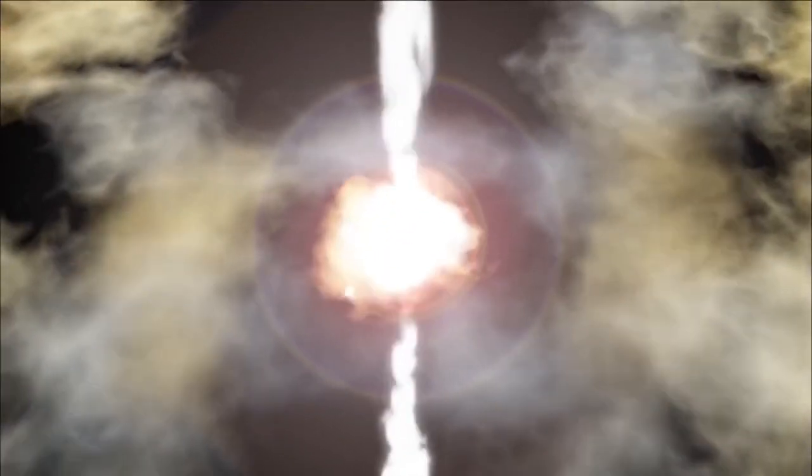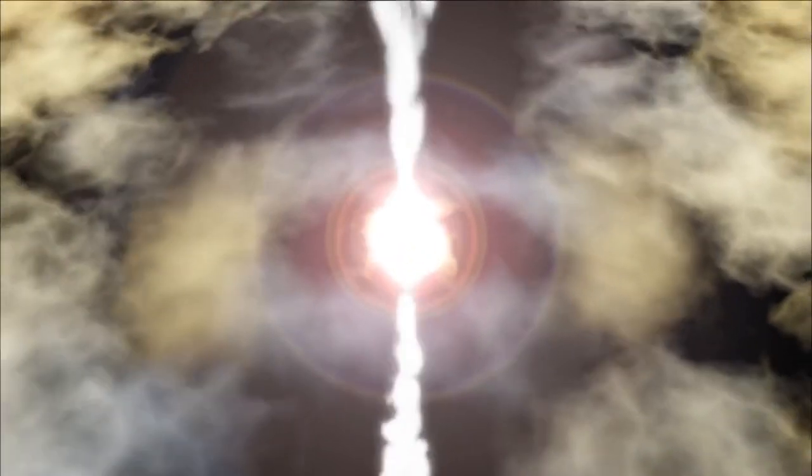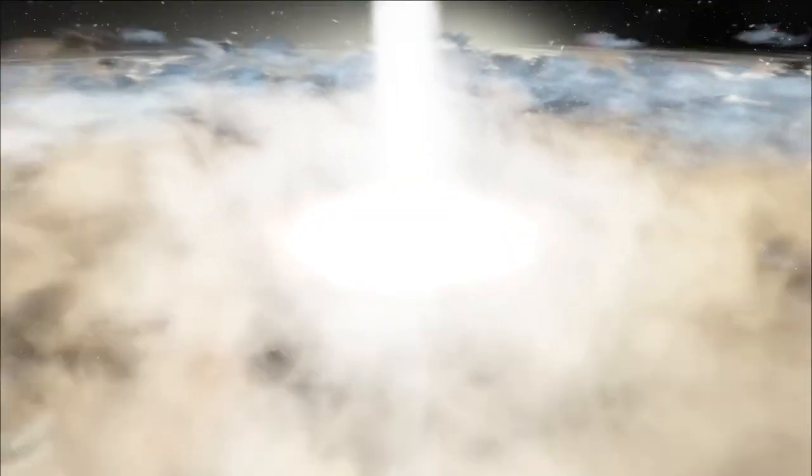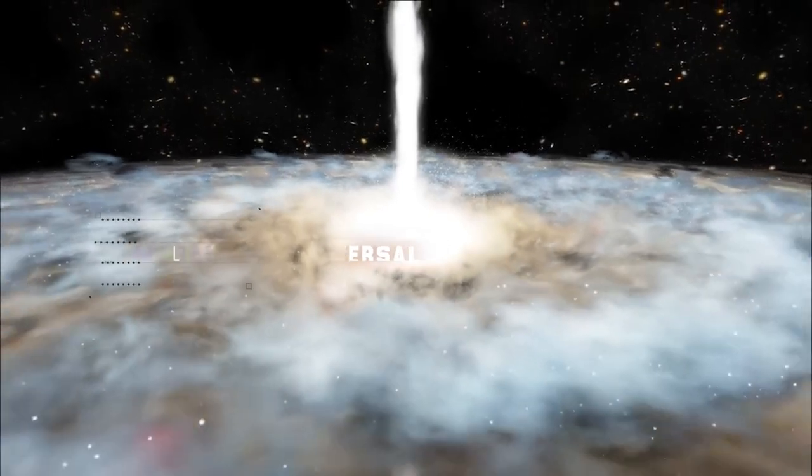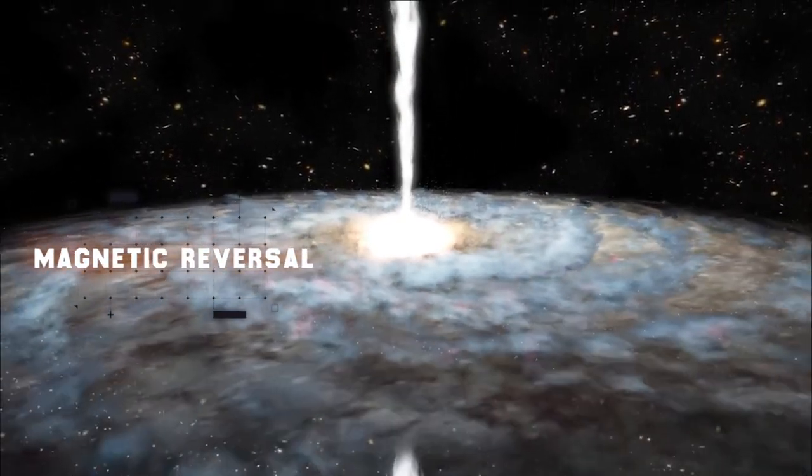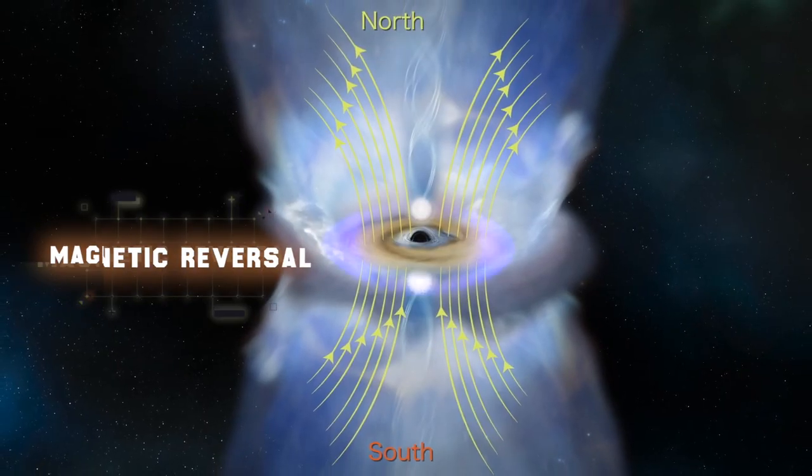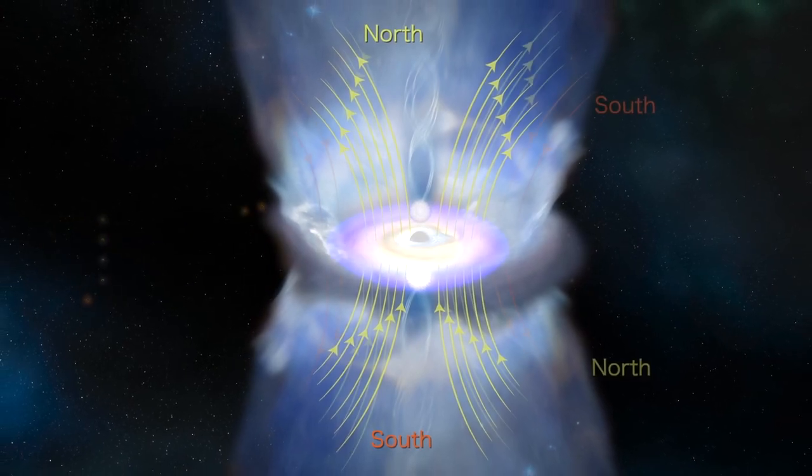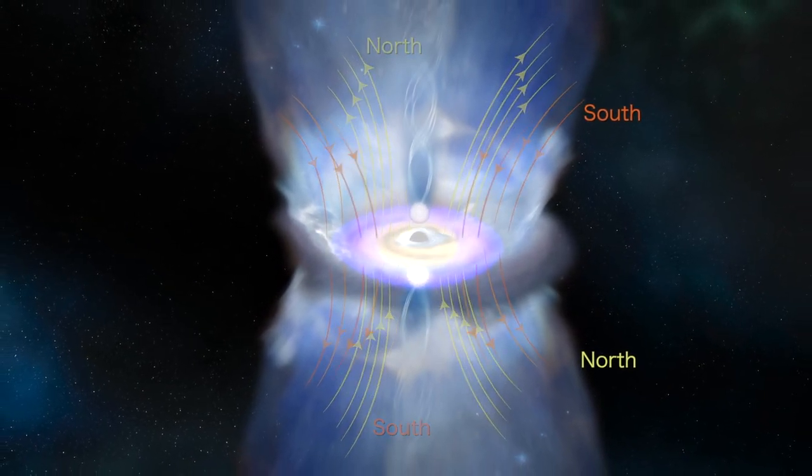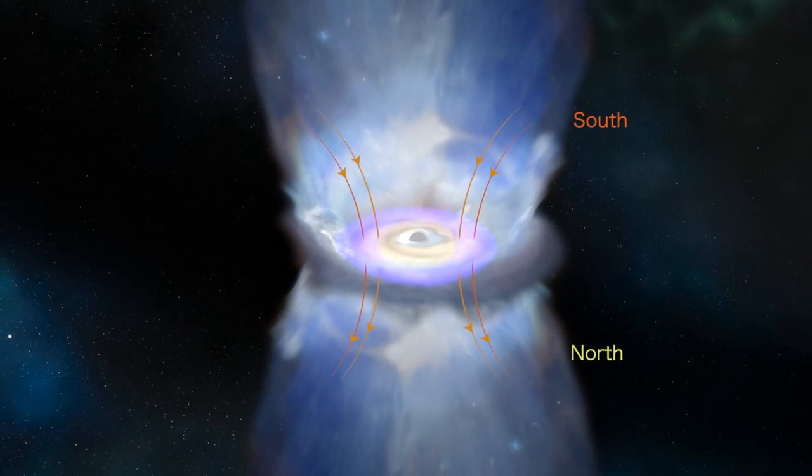Scientists now believe that this outburst of radiation was caused by the black hole in this galaxy's center, going through the process called magnetic reversal, in which its magnetic field surrounding the black hole flips, swapping the positions of the North Magnetic Pole and the South Magnetic Pole.